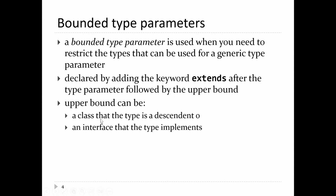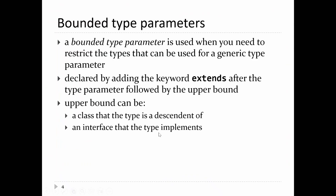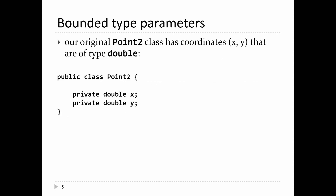You use extends after the type parameter followed by the upper bound. Your upper bound can be one of two things: it can be a class that the type is a descendant of, or it can be an interface that the type implements. It's easier to understand with an example.